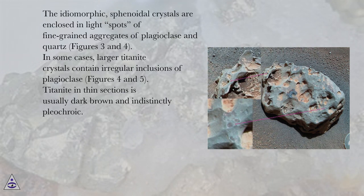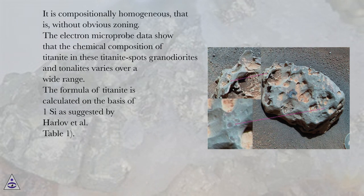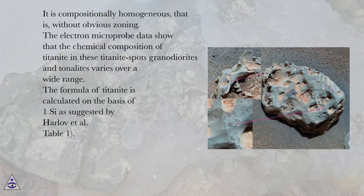Titanite in thin sections is usually dark brown and indistinctly pleochroic. It is compositionally homogeneous, that is, without obvious zoning. The electron microprobe data show that the chemical composition of titanite in these titanite-spots granodiorites and tonalites varies over a wide range. The formula of titanite is calculated on the basis of 1 O as suggested by Harlov et al., Table 1.